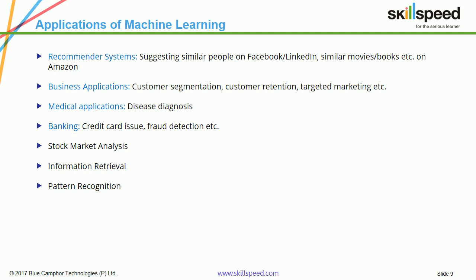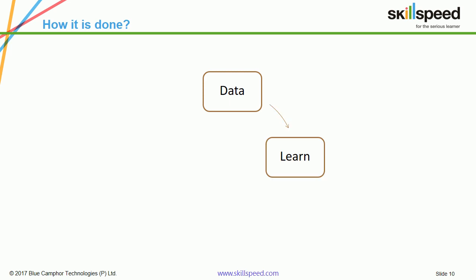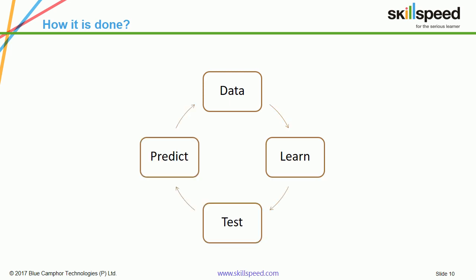I recommend learners to do a Google search for applications of machine learning to get a better idea. Now, the biggest question is how it is done. There are certain phases for every machine learning activity. Obviously, you will have some data, and there is a learning phase, then a testing phase, then a prediction phase. Based on this data, the machine is supposed to learn — and when you say learn, there is something called feature extraction.